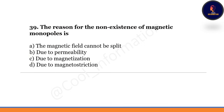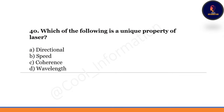The reason for the non-existence of magnetic monopoles is — option A: the magnetic field cannot be split. Option B: due to permeability. Option C: due to magnetization. Option D: due to magnetic restriction. Correct option is A — the magnetic field cannot be split.